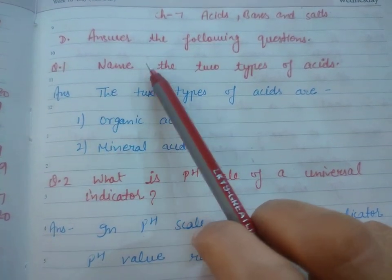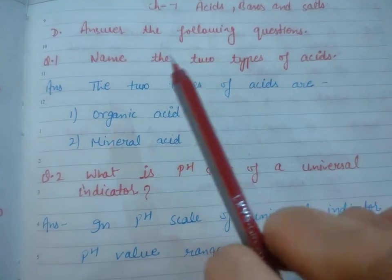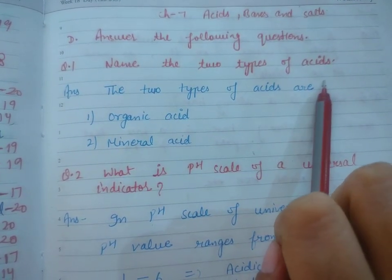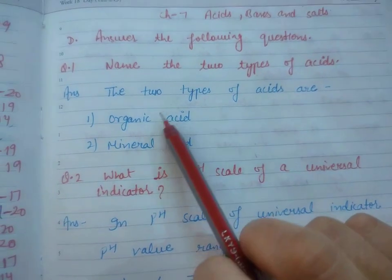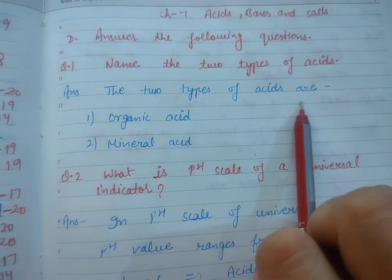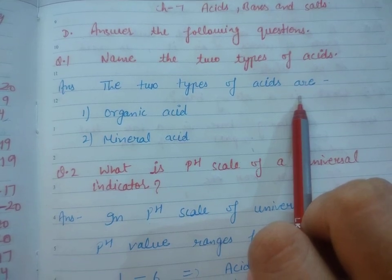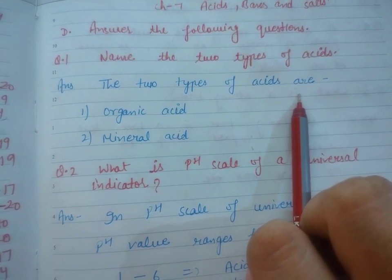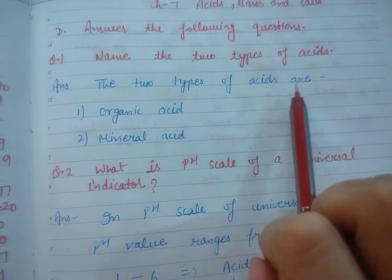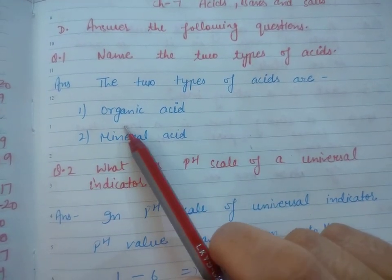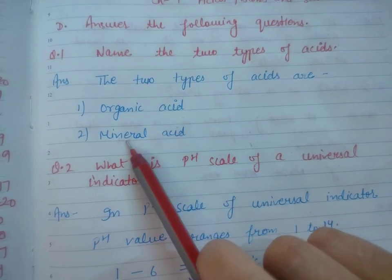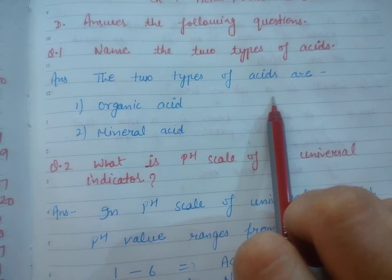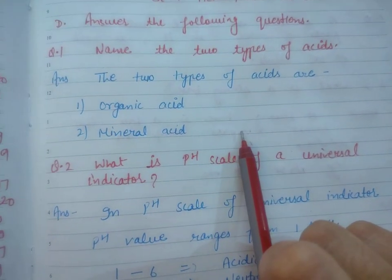So question 1 is: name the two types of acid. The two types of acids are, on the basis of their source - where we get that acid from - organic acid and mineral acid. Organic acid we get from living sources, either plants or animals. And mineral acid from minerals.